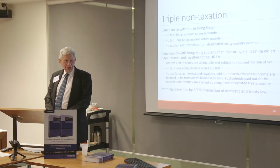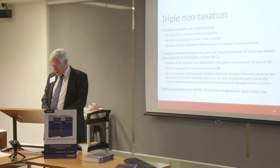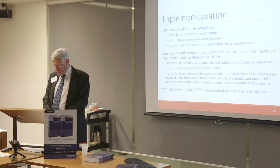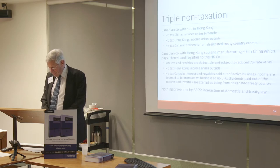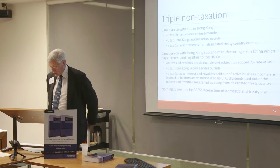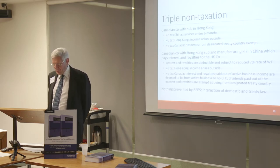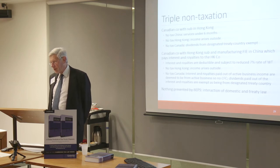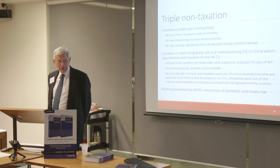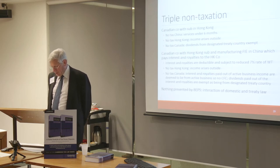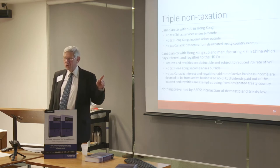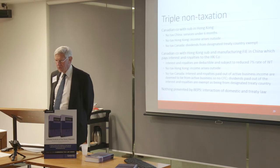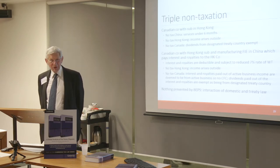The second example is slightly different but involves the same countries. The Chinese company is now manufacturing in China and paying deductible interest and royalties to Hong Kong. Those are deductible in China and subject to a treaty-reduced rate of 7%. No tax in Hong Kong, as before. Now Canada regards the interest and royalties as active business income because they're paid out of active business income, and there are therefore no CFC implications. The interest and royalties get redistributed by the Hong Kong company as dividends, and we've seen that those dividends are exempt.